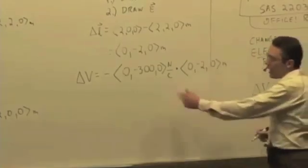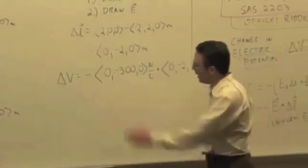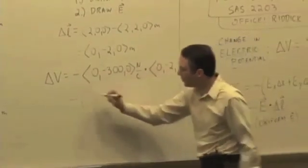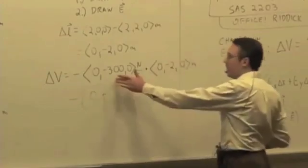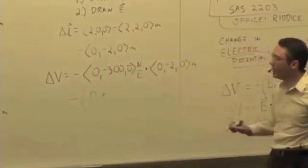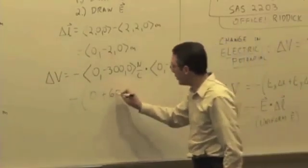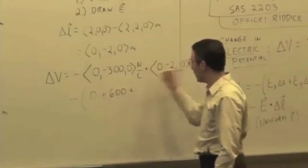And so I have a negative multiplying 0 times 0 gives me 0, plus negative 300 times negative 2 gives me 600 plus 0.